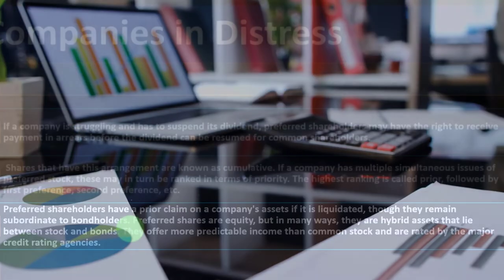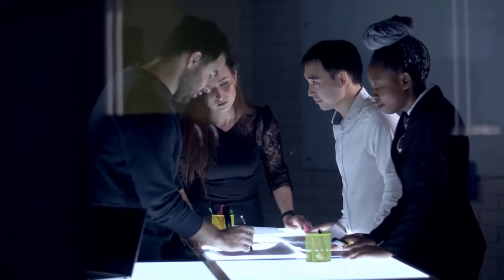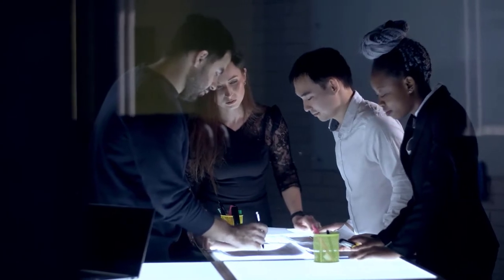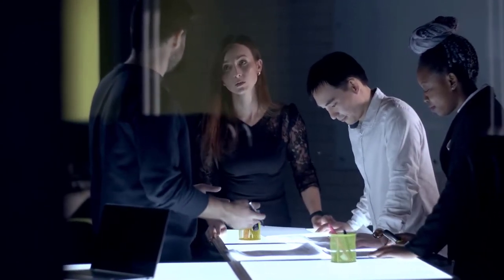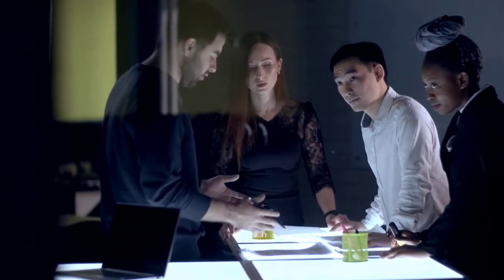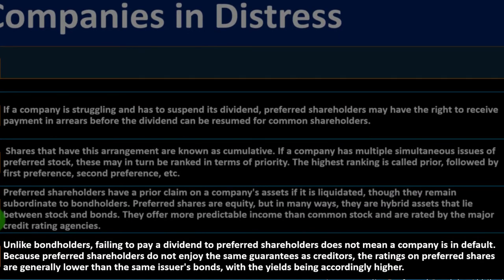Common shareholders are last in line, but that doesn't mean common shares are not as good — if the company does well, common shareholders typically have more potential to benefit. There's less security but more upside, and that's how risk typically works. Preferred shares are equity, but in many ways they are hybrid assets that lie between stocks and bonds, offering more predictable income than common stock and rated by the major credit rating agencies.